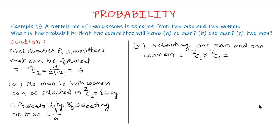This is equal to 2C1 is 2 and 2C1 is again 2 therefore 2 multiplied by 2 equal to 4 therefore probability of one man equal to 4 upon 6 which is equal to 2 upon 3.